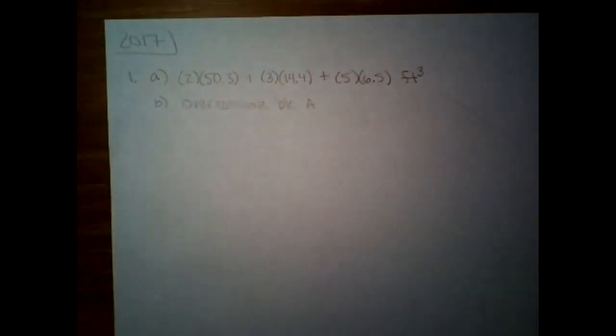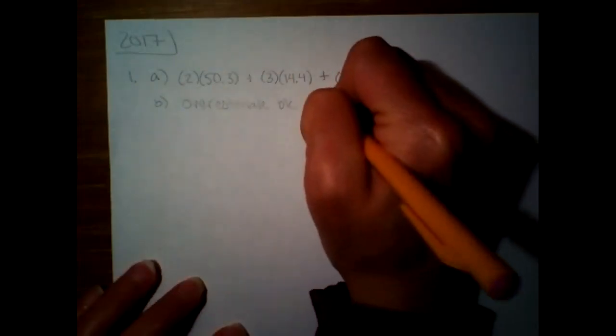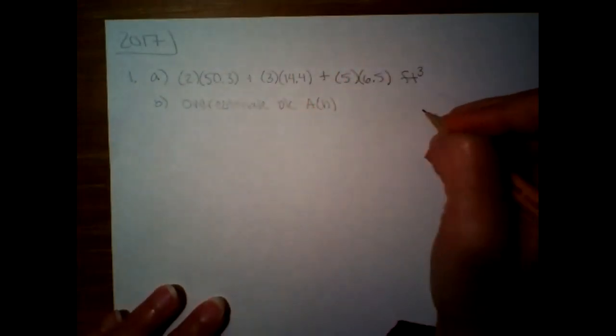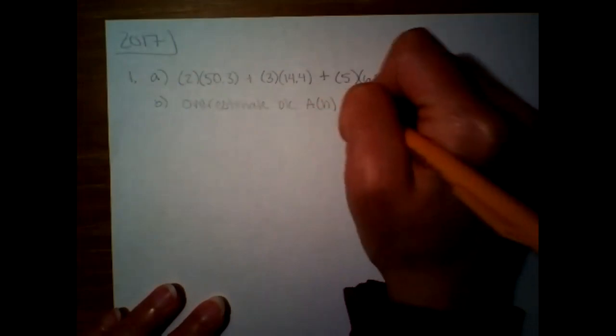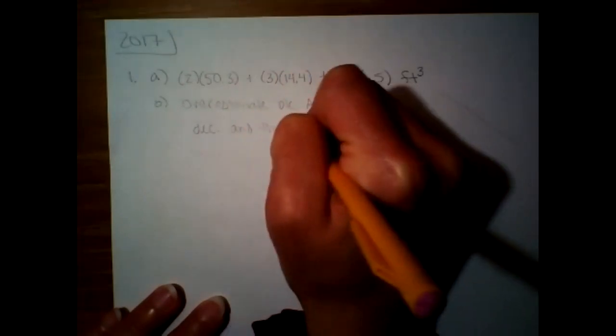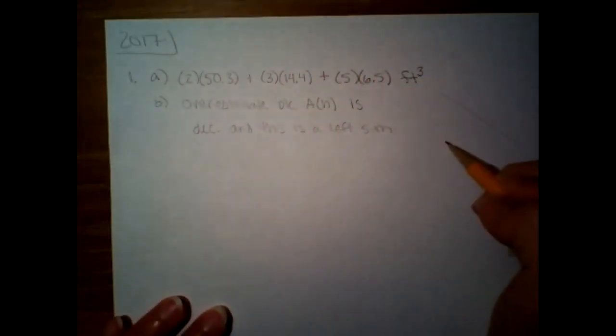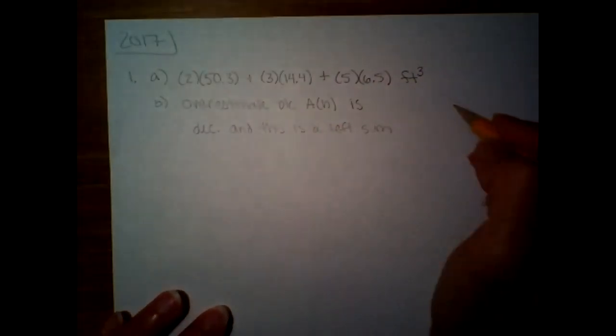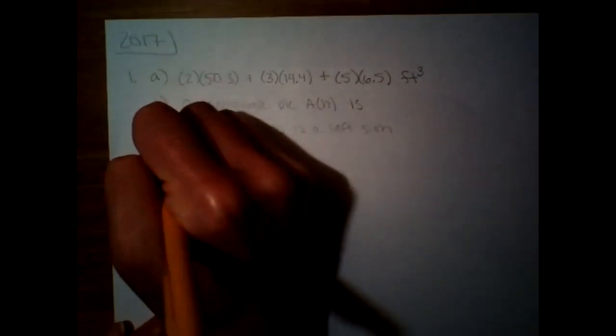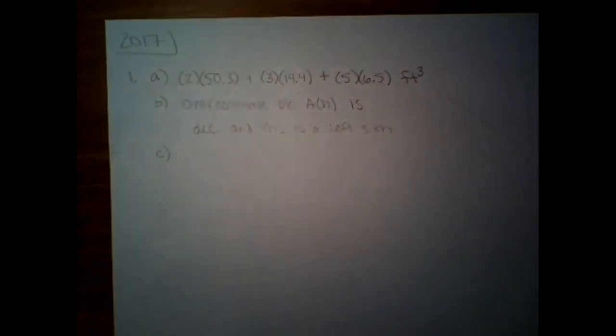So an overestimate because, was it A of T? Sorry, I'm trying to go backwards and forwards. A of H. Overestimate because the function A of H is decreasing, and this is a left sum. If the graph was increasing and we did a left sum, that would be an underestimate. Or since it's decreasing, if we did a right sum, that would be an underestimate. So I usually just draw a line that's increasing and decreasing to help me visualize that.